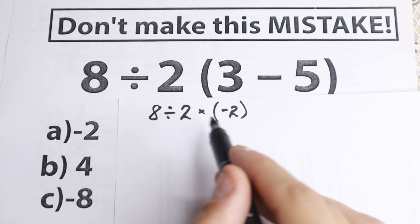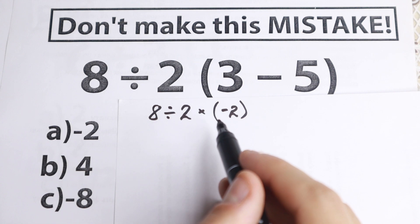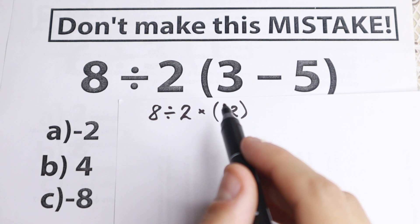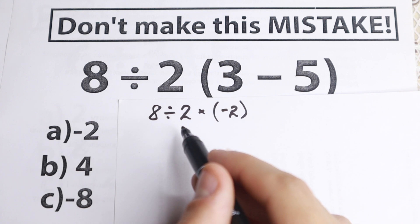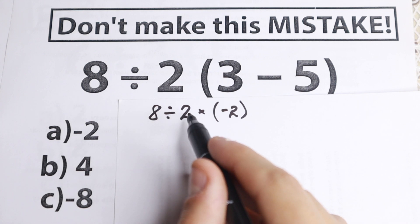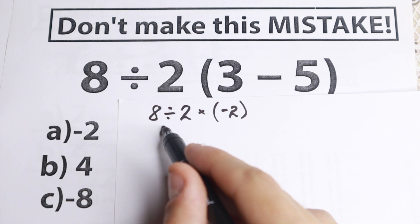And according to the order of operation, division and multiplication have the same precedence. So the correct order is to evaluate from left to right. And first take 8 dividing by 2, we will have like 4.